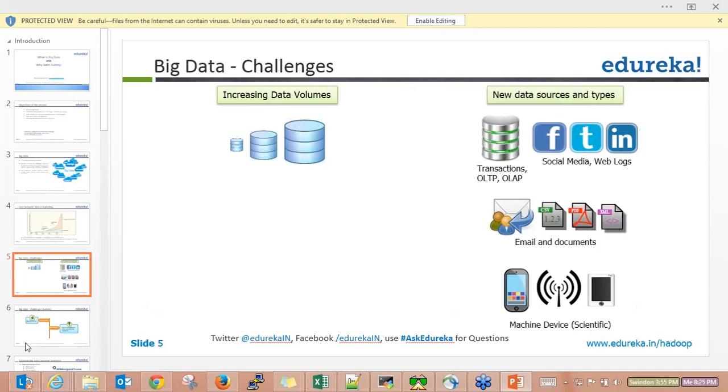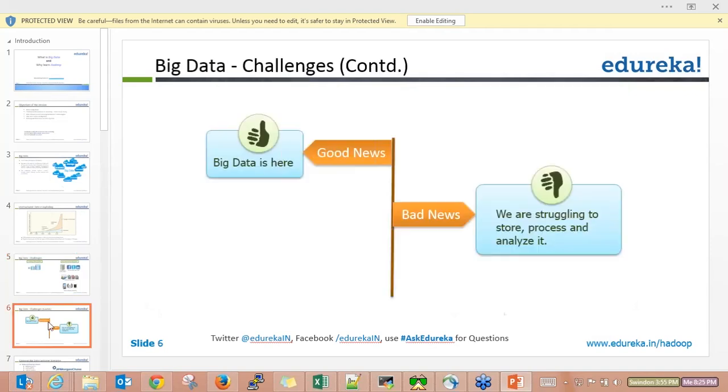The good news is we have Big Data technologies - Hadoop, frameworks like MapReduce, tools like Hive, PIG, NoSQL, HBase, and Cassandra. By using these, we can now process huge volumes of data by involving